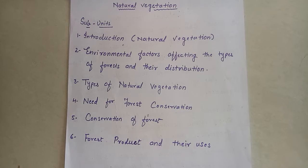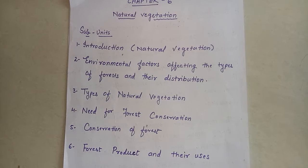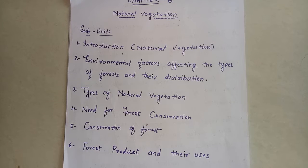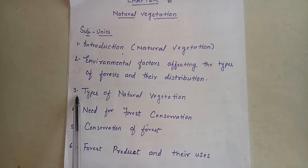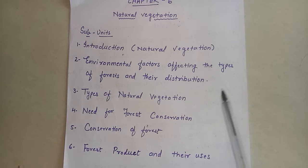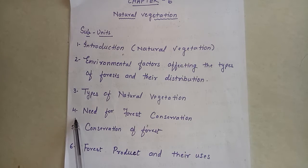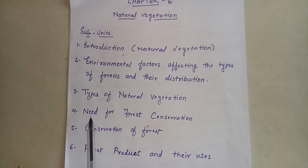Very good morning, children. Earlier we started our 6th chapter, that is natural vegetation. In my previous video we have completed these 3 points, till types of natural vegetation. Today we will start our 4th point: need for forest conservation.